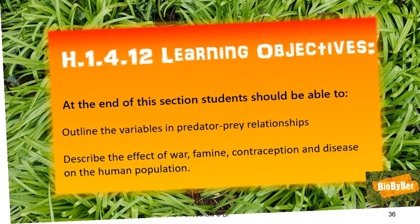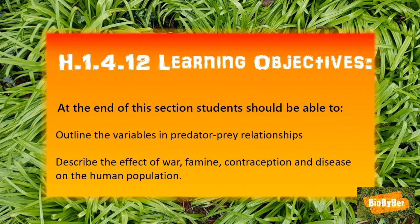Now that we have reached the end of our lesson, have we achieved our objectives? Are you able to outline the variables in predator-prey relationships? Are you able to describe the effect of war, famine, contraception, and disease on the human population?